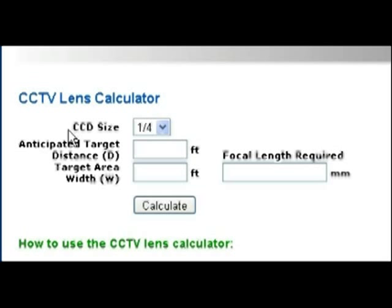The first thing you want to do is select the appropriate CCD size, and you want to make sure you have the correct CCD size. CCD cameras come in a variety of sizes. The most common one is one-third inch. If you don't know the CCD size, ask your vendor that you're buying the camera from what the CCD chip size is. That's really important to get an accurate result.